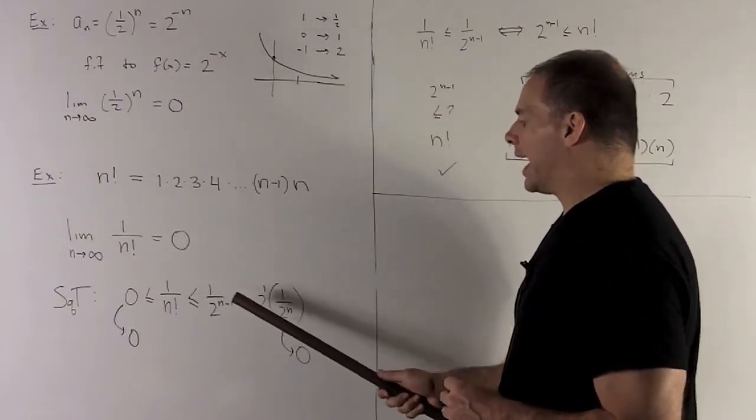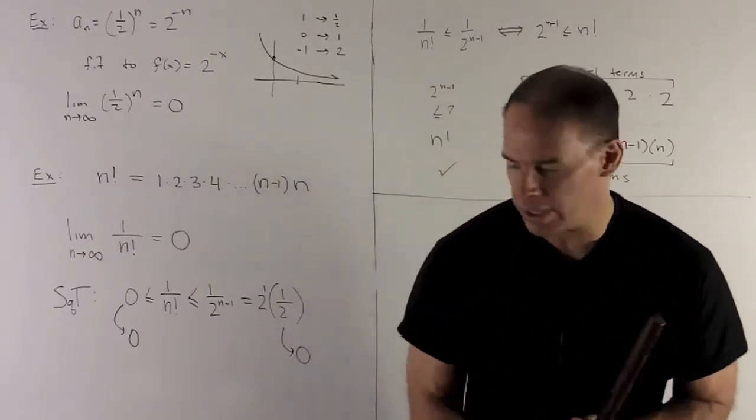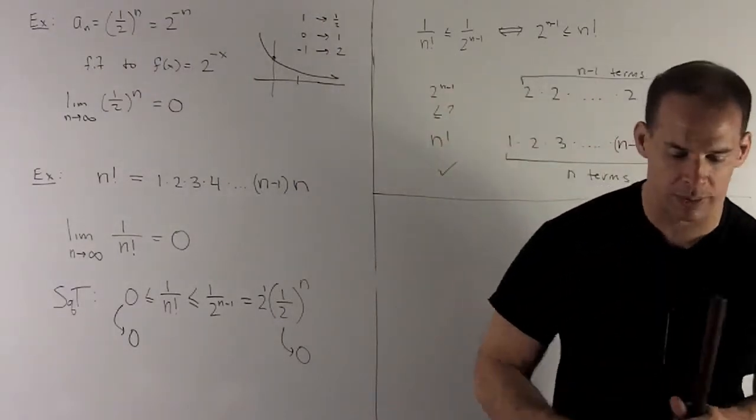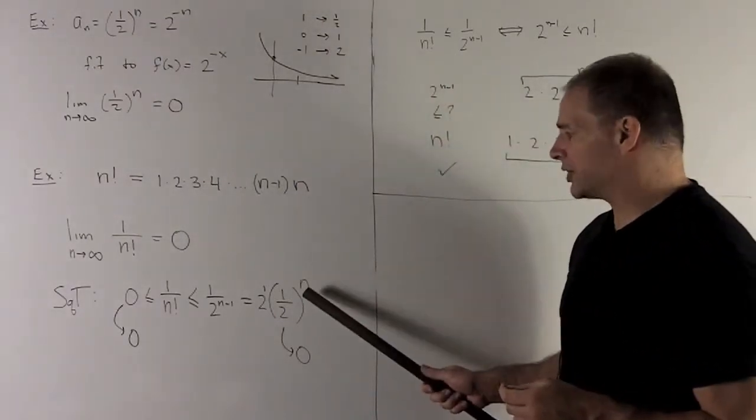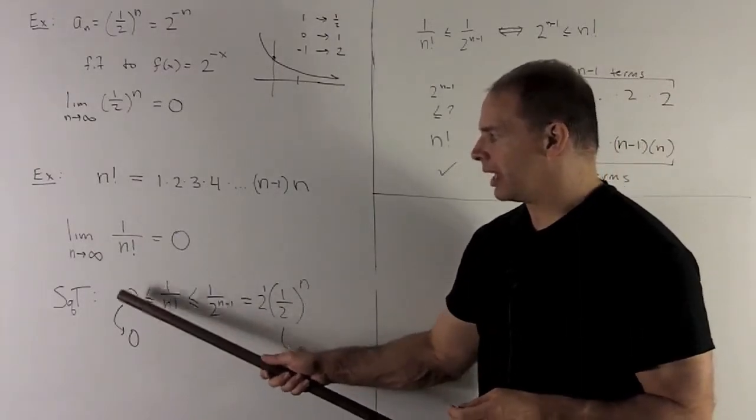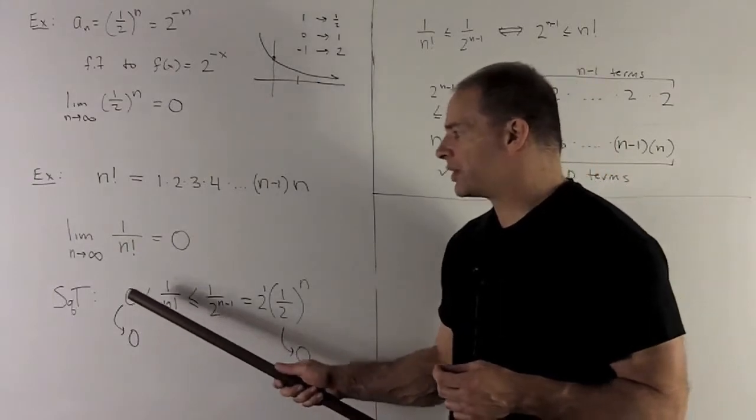Now, this I can rewrite as 2 times (1/2)^n. So by the result I just proved, as n goes to infinity, we'll have that this goes to 0. This is always 0. So we're going to have a squeeze theorem.